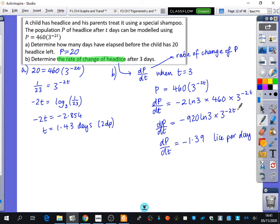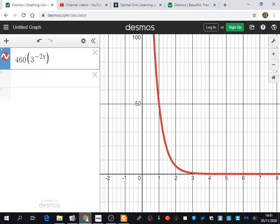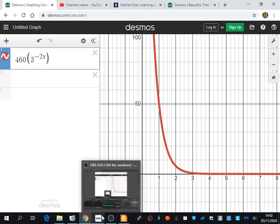So, if I type in minus 920 LN3 times three to the power of minus two, you get minus 112. So, on day one, the shampoo was killing 112 lice per day. And then on day three, it had gone down to this. And that's because when you look at the graph, on day one, the rate of change is coming down really, really steeply. And on day three, it's not very steep at all. And you've probably seen probably more exponential graphs than any other students I've ever taught because of the pandemic. These are all exponential graphs. So you're quite lucky to be studying differentiation at this time because you'll at least be able to use it when you're trying to understand all these things that are going on.